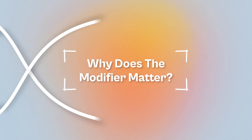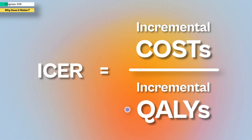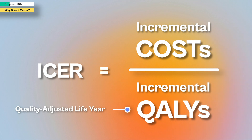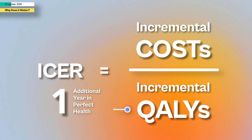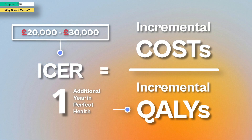Why does the severity modifier actually matter? The main thing NICE focuses on when making a decision is the incremental cost-effectiveness ratio, or ICER. The ICER estimates how much a medicine costs to provide one QALY — a quality-adjusted life year — which you can think of as one additional year in perfect health. Typically, NICE considers a medicine to be cost-effective for the NHS if it costs between £20,000 and £30,000 per QALY.